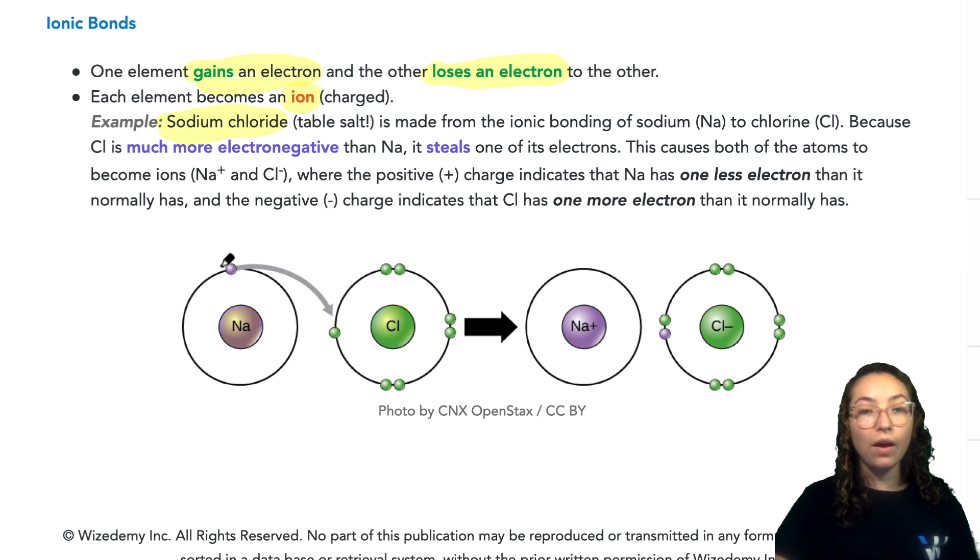So when it does so, it will have an overall negative charge as you can see here. And because sodium lost an electron, it'll have an overall positive charge now. And so these are two ions.